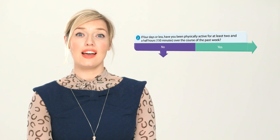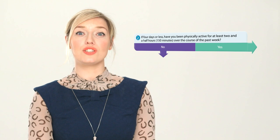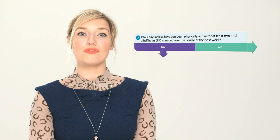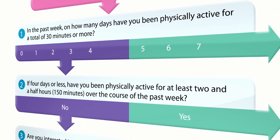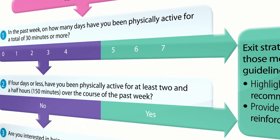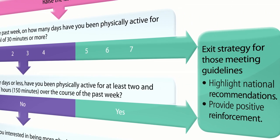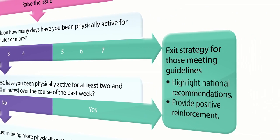If four days or less: have you been physically active for at least two and a half hours or 150 minutes over the past week? If your patient's physical activity totals two and a half hours or 150 minutes each week, encourage them to keep this up and exit the pathway. Remember, the purpose of the screening tool is to identify those not getting enough activity, so if someone is meeting the guidelines, it's okay to simply offer a sentence or two of positive reinforcement.